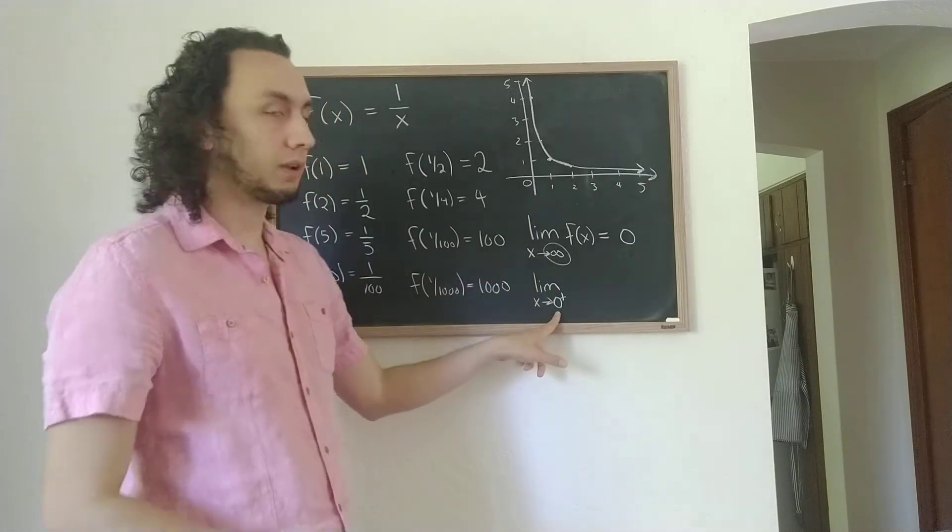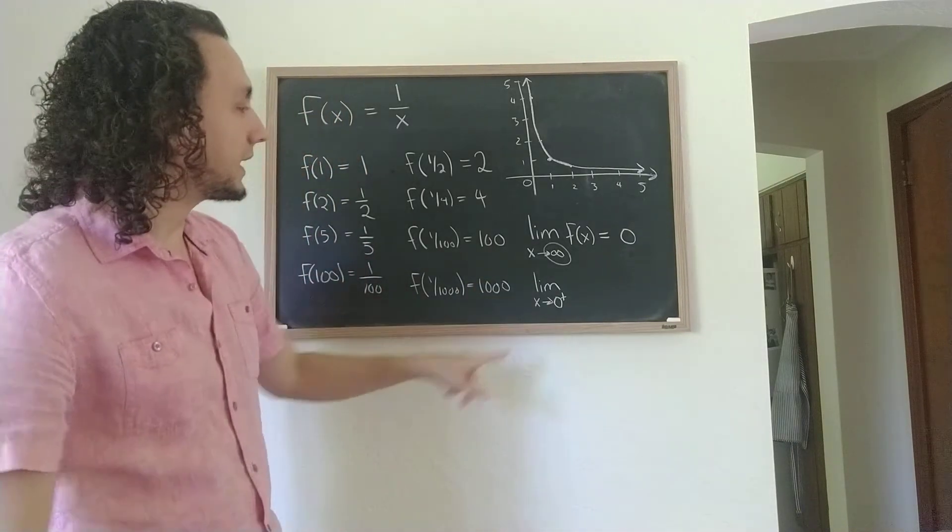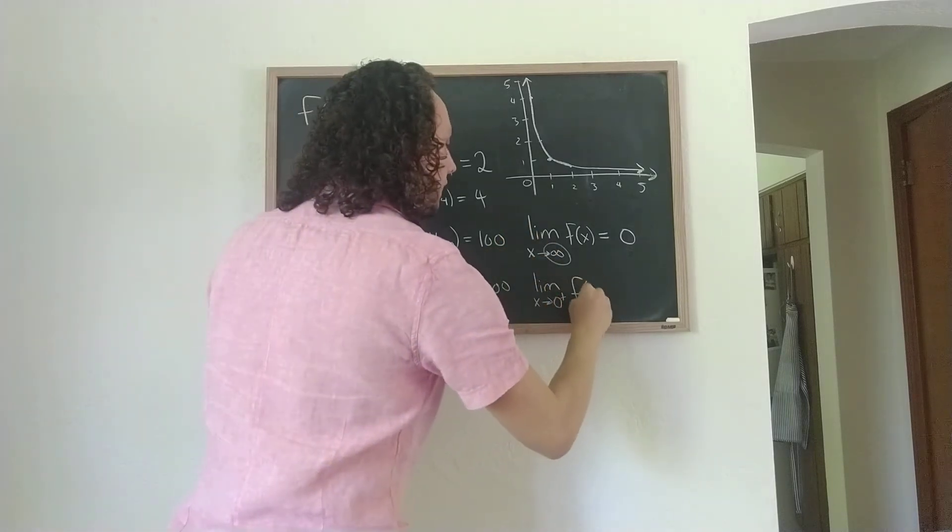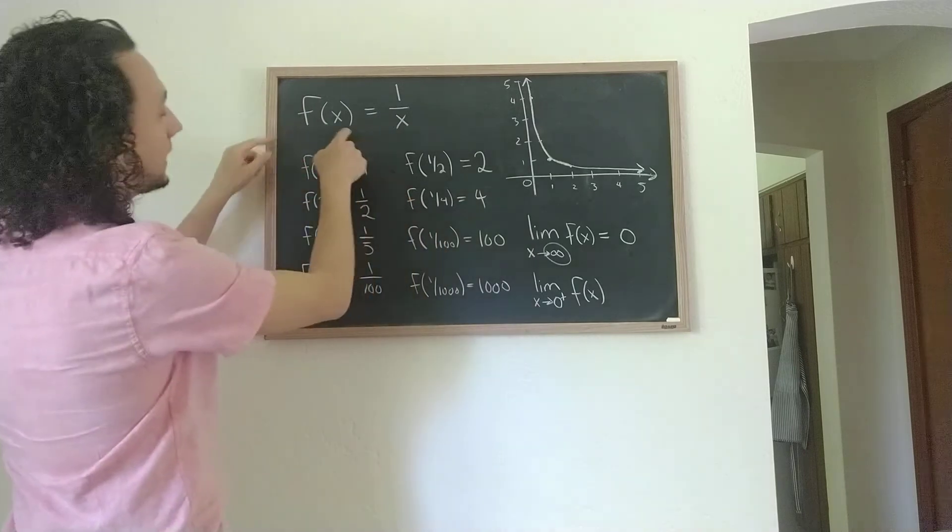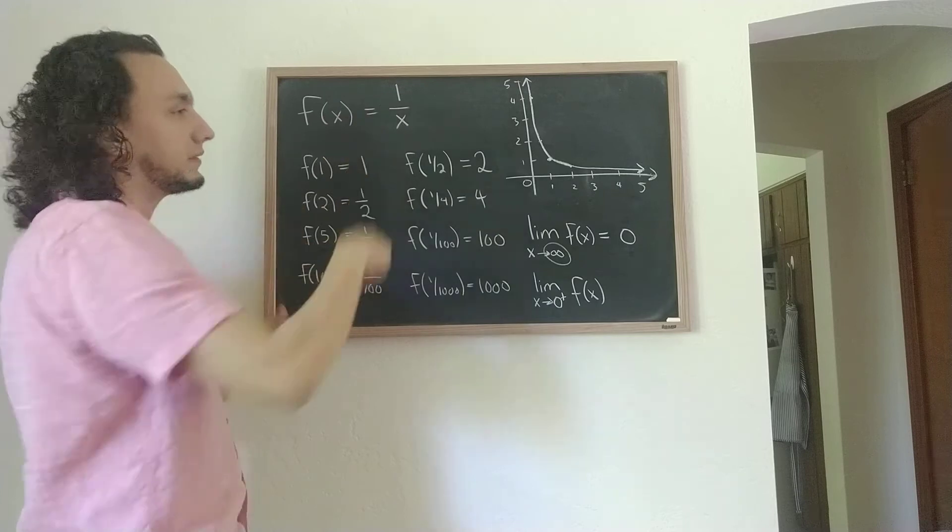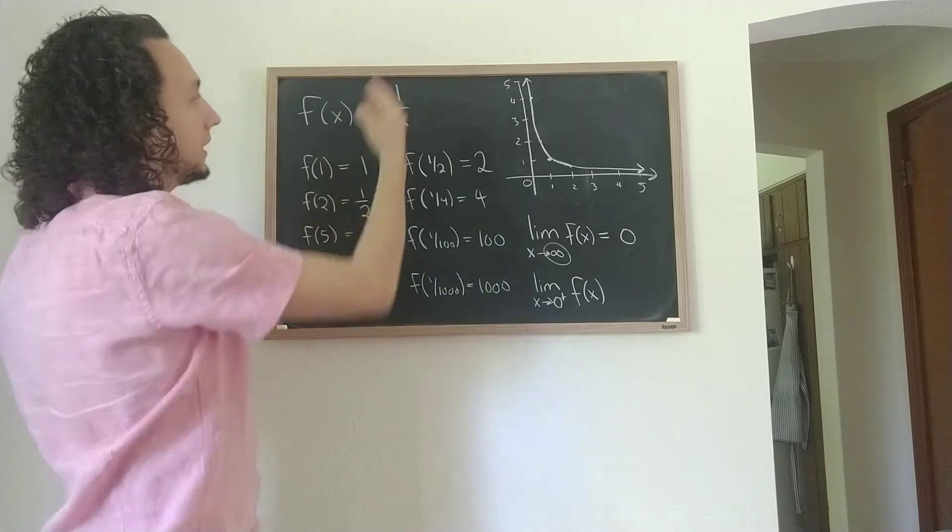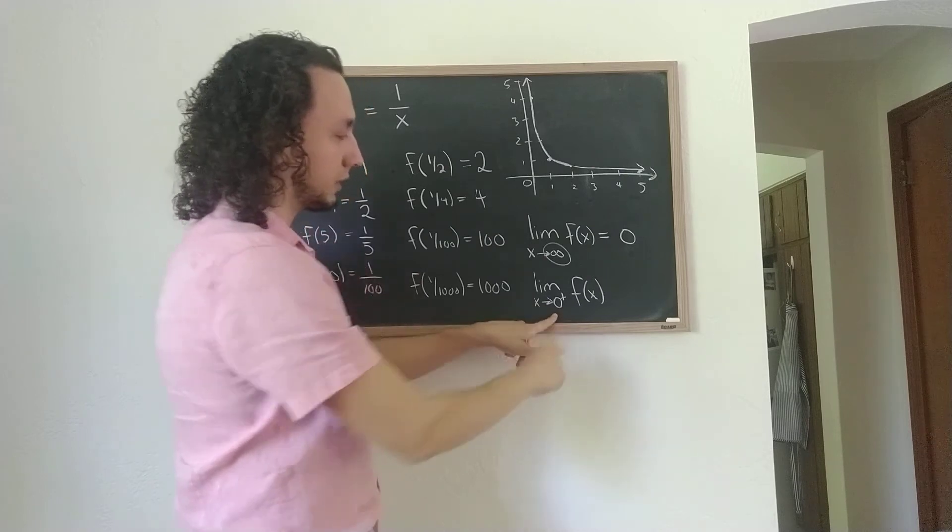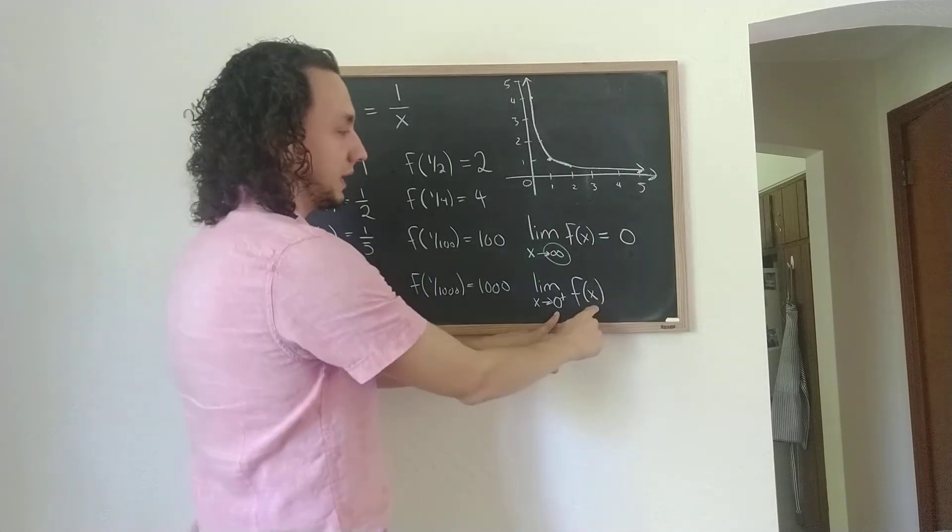So as x gets smaller and smaller, right, now again, I can't just put 0 into the function f of x, because we saw right at the beginning that the function is not defined as 0, right? If I put 0 in literally, I get 1 divided by 0. That's like error, undefined.